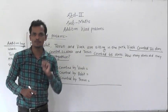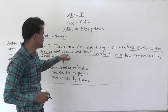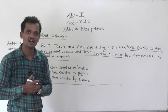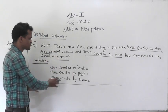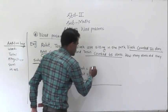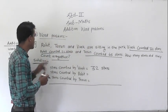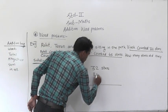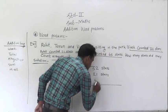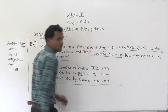We have to find how many stars they counted in all. First, write the information given in the word problem. Stars counted by Vivek: 32. Stars counted by Rohit: 21. Stars counted by Tarun: 45. We have written the information given in the word problem.